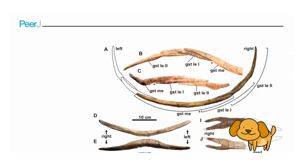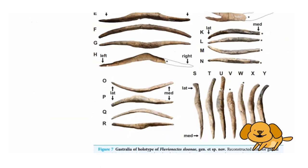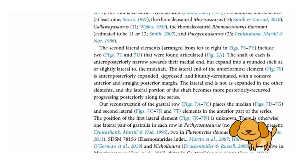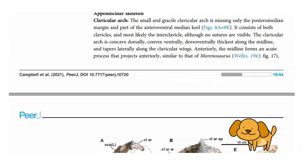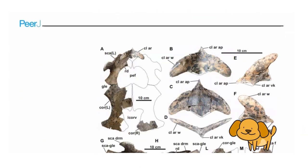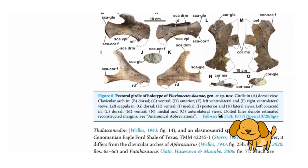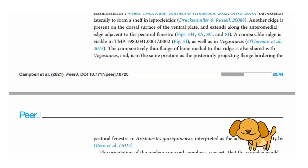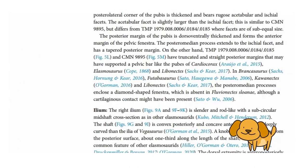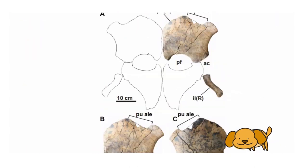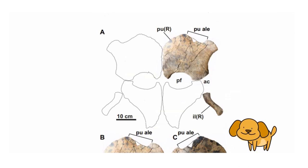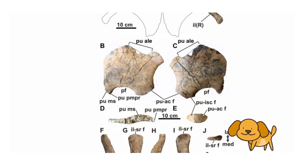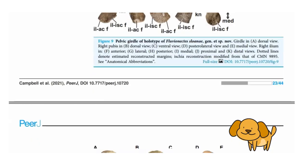The Dinosaur Park Formation plesiosaurian fossils were recovered from both estuarine bay and fluvial paleochannel sediments. The holotype skeleton represents an osteologically mature individual with an estimated body length of around 5 meters, although the largest referred Dinosaur Park Formation elasmosaurid might have been closer to 7 meters, which is considerably larger than other plesiosaurians reported from non-marine deposits.